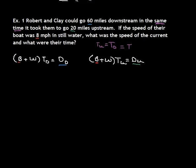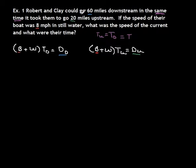Let's give it a whirl. Robert and Clay could go 60 miles downstream in the same time it took them to go 20 miles upstream. If the speed of their boat was 8 miles per hour in still water, what was the speed of the current and what was their time? Let's collect our information. Do we have the rate of the boat? Yes — the speed of their boat is 8, and it's the same going downstream as upstream. So we fill that in: rate of the boat is 8.